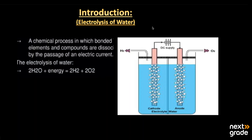Assalamu alaikum my dear students, I hope all of you are fine and doing well. The topic we will discuss today is the electrolysis of water. The word electrolysis means electrically — 'electro' means electricity and 'lysis' means the breaking. So electrolysis is the breaking of water with the help of electricity. This process is basically a chemical process in which bonded elements and compounds are dissociated by the passage of an electric current.